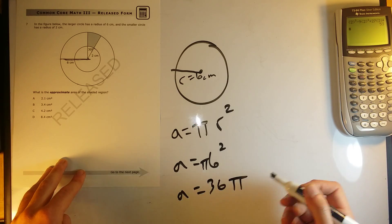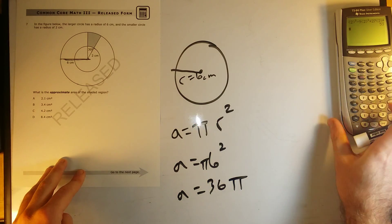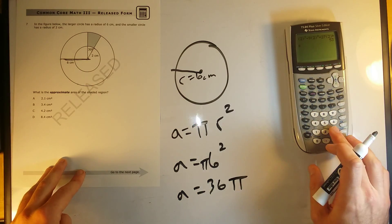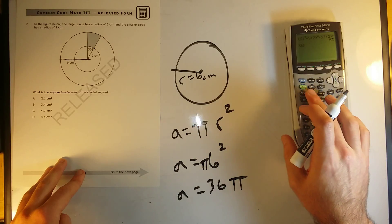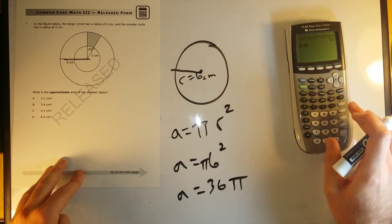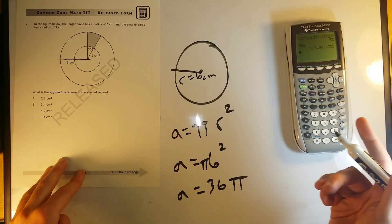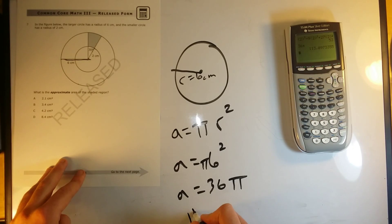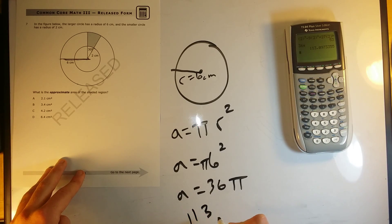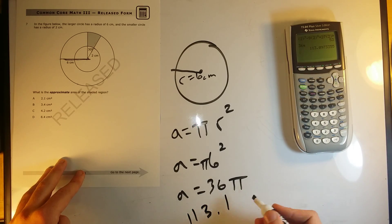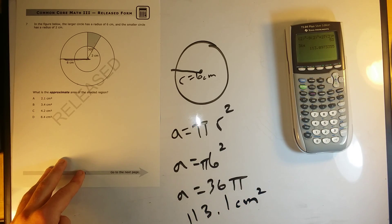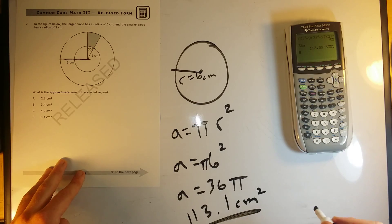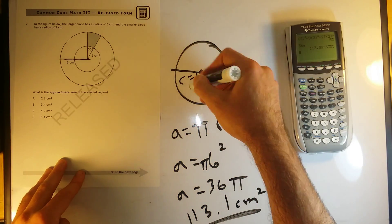Area is equal to 36 pi, or if we want to round that answer, 36 times pi is about 113.1 centimeters squared. So this is our area for the whole big circle.